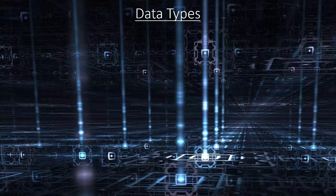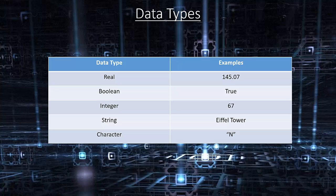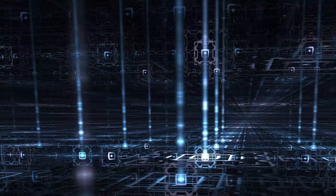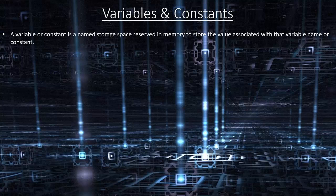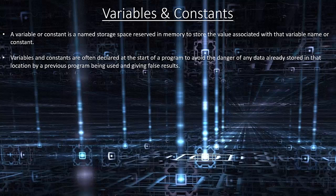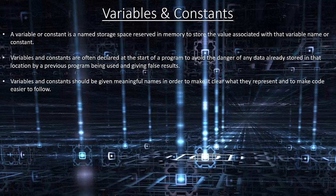Data types include: Real (a number with a decimal point), Boolean (true or false), Integer (a whole number), String (a word), and Character (a letter). A variable or constant is a named storage space reserved in memory to store the value associated with that variable name or constant. Variables and constants are often declared at the start of a program to avoid the danger of any data already stored in that location giving false results. Variables and constants should be given meaningful names to make it clear what they represent and to make code easier to follow.